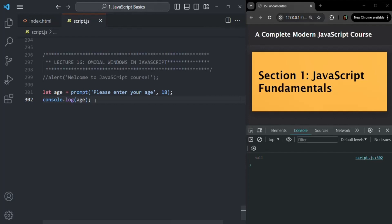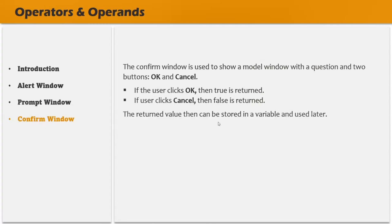We also have another modal window called confirm. The confirm modal window is used to get a confirmation from the user. In the confirm modal window, we show a question and two buttons — OK and cancel. If the user clicks OK, the confirm function returns true. If the user clicks cancel, the confirm function returns false.